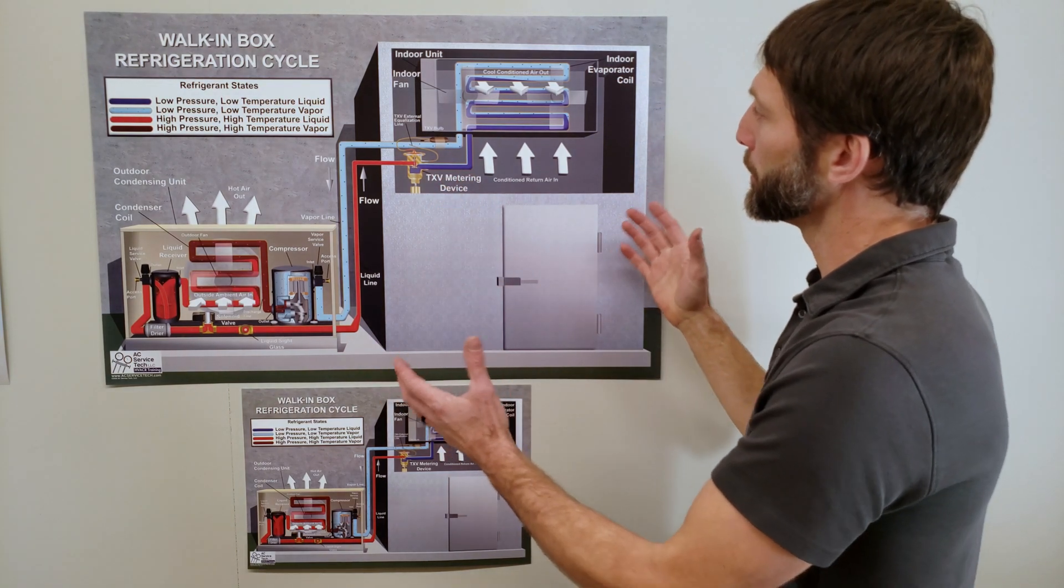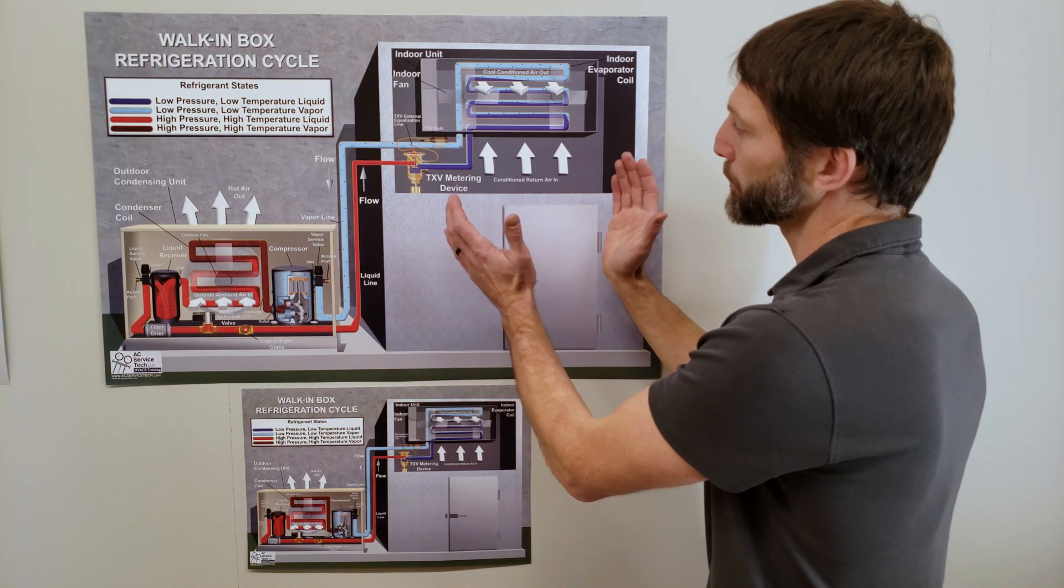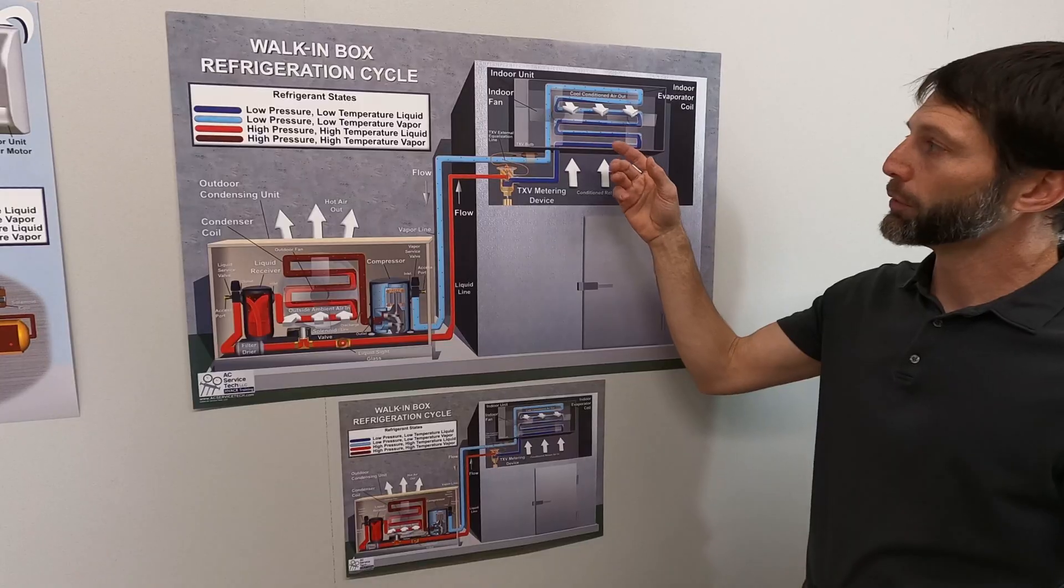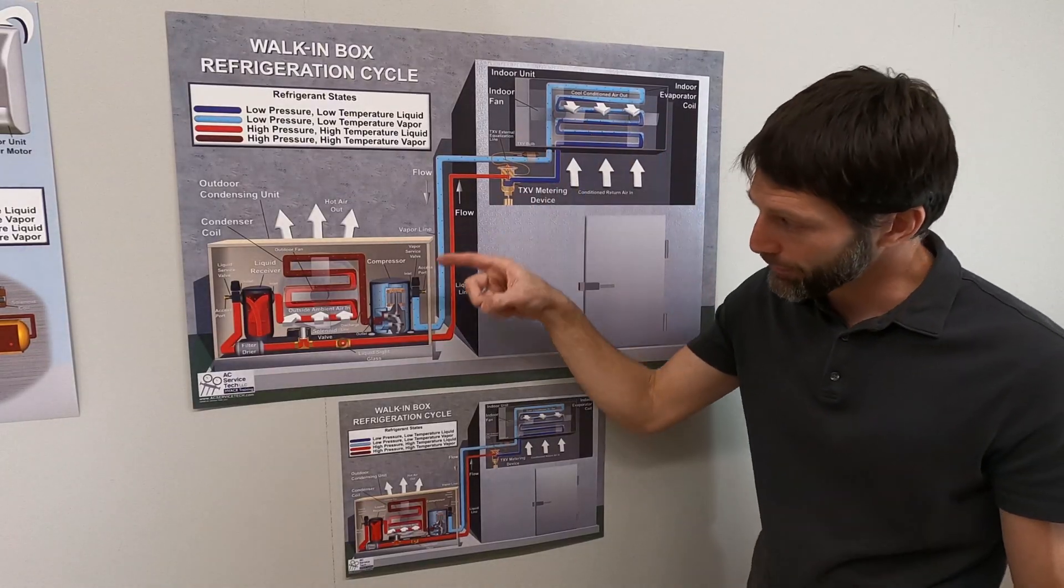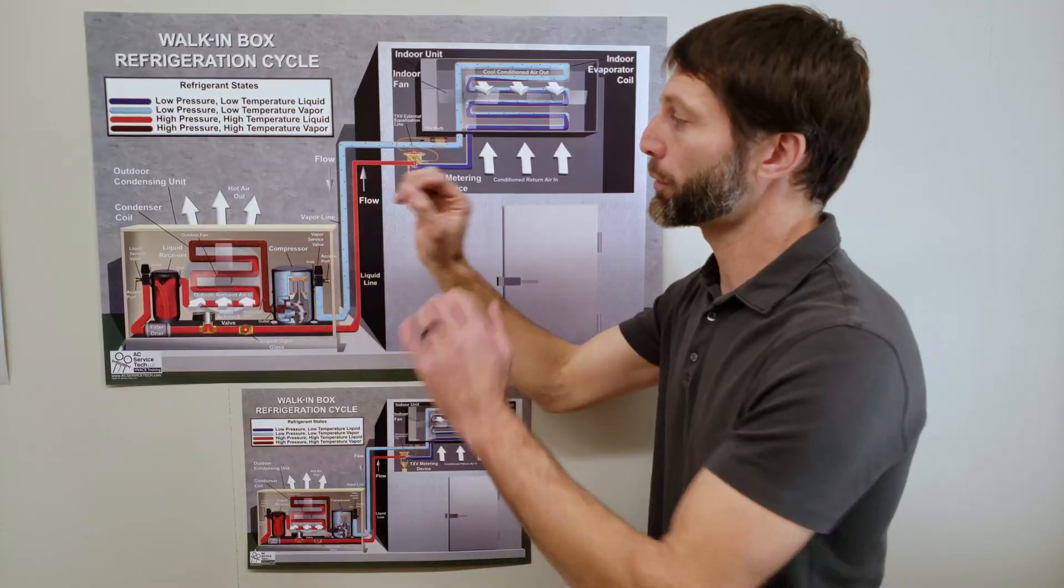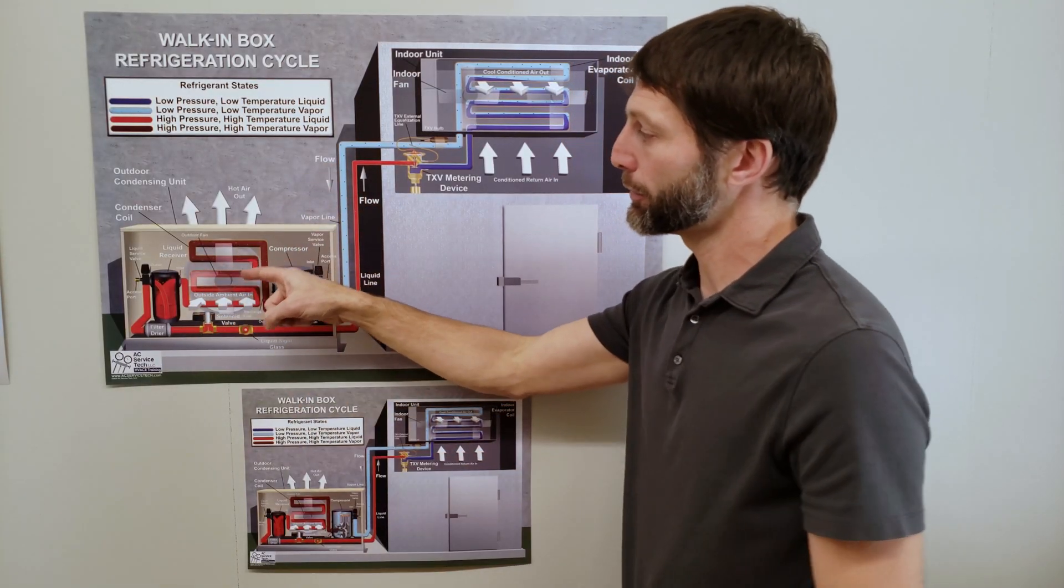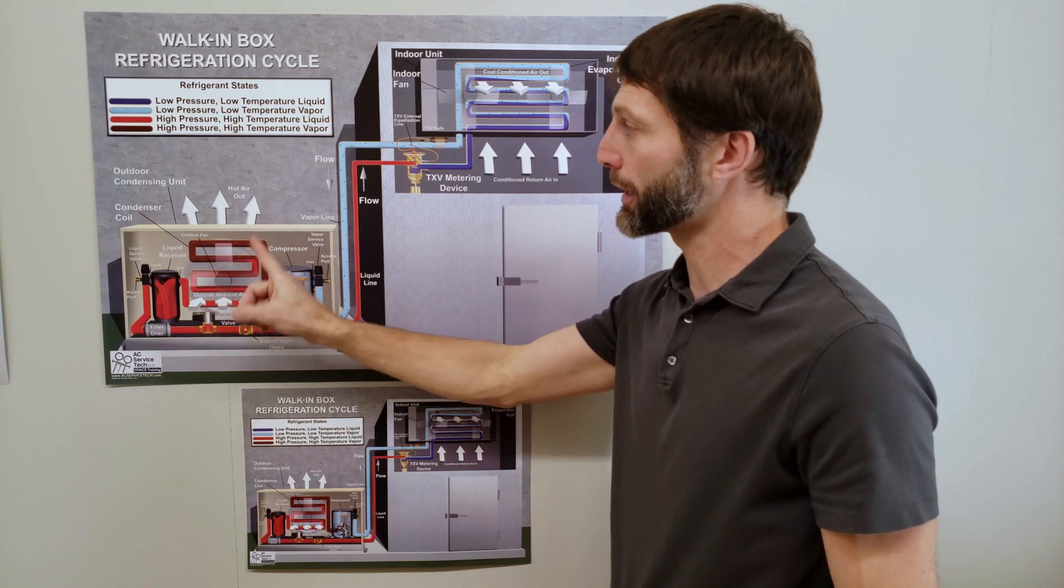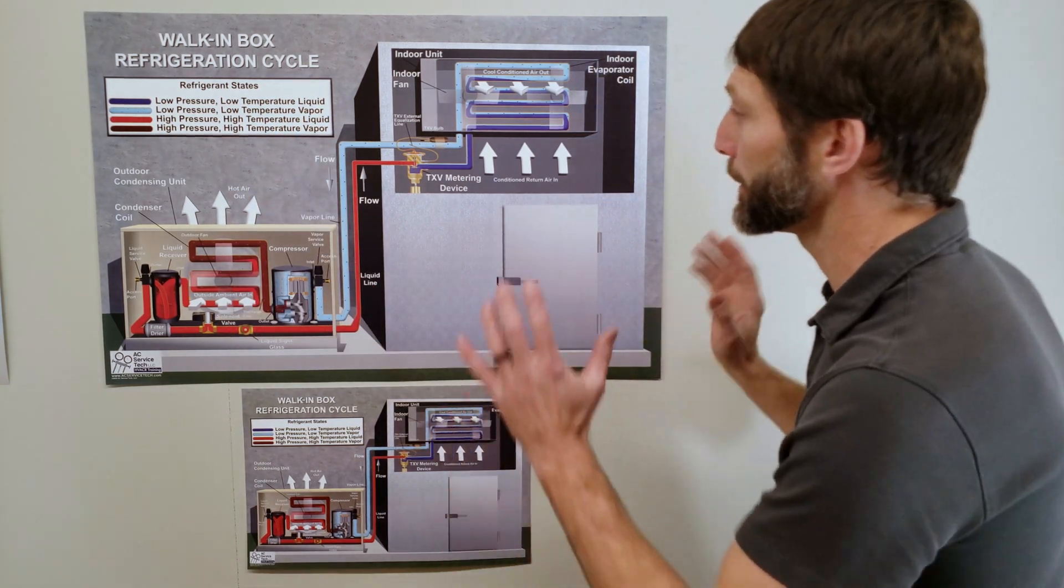What's happening is you're absorbing heat from the product within the box. That's getting absorbed in the refrigerant. The refrigerant is traveling out to your outdoor unit, and that's where the refrigerant is rejecting the heat by the air that's coming across here and getting blown at the top. That's how that works.